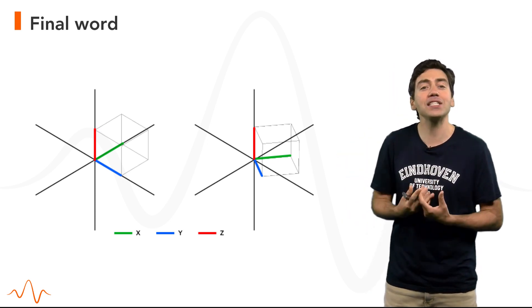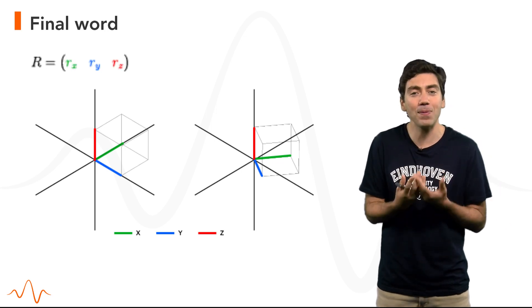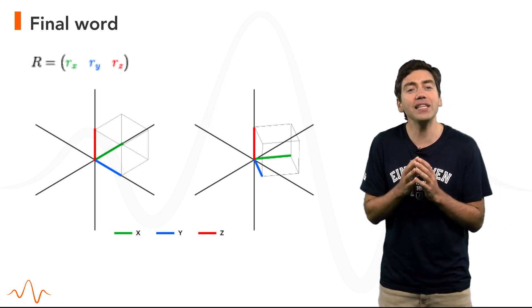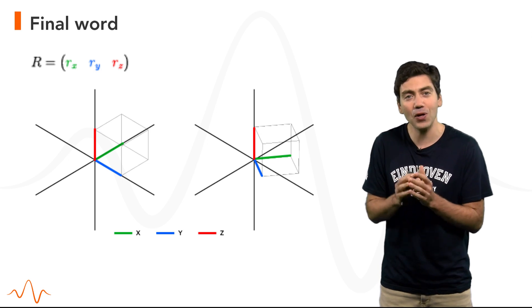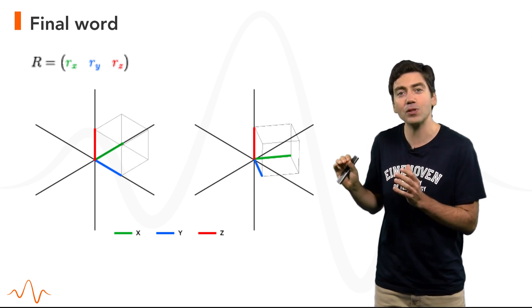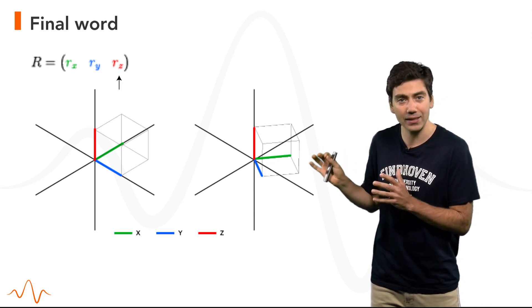Now, in R3 a rotation can be characterized by a 3x3 matrix. We can obtain this matrix by rotating each of the unit vectors corresponding to the x, y and z axis.